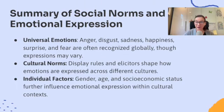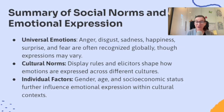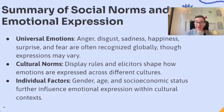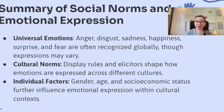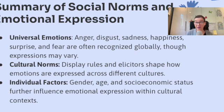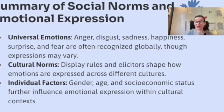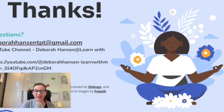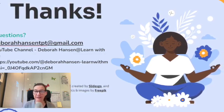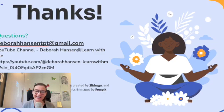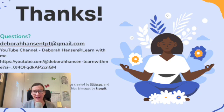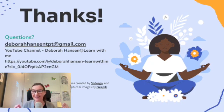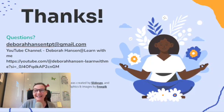Let's review everything we just learned. Universal emotions — anger, disgust, sadness, happiness, surprise, and fear — are often recognized globally, though expressions may vary. Cultural norms, display rules, and elicitors shape how emotions are expressed across different cultures. And individual factors — gender, age, and socioeconomic status — further influence emotional expression within cultural contexts. That is all the essential knowledge you need to know for 4.7 Emotions Part 2, the second CED question: explain how social norms and experiences influence the expression of emotions. Hopefully you found that helpful. Thank you so much for listening — see you next time.